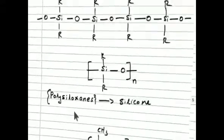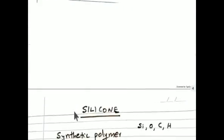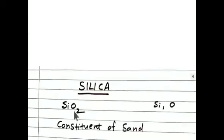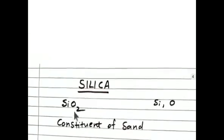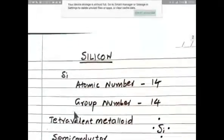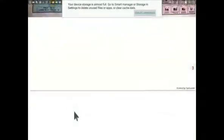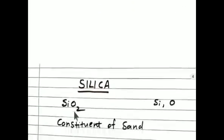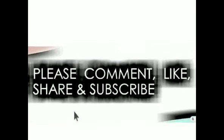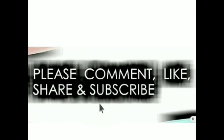Silicon is an element. Silica is a compound, SiO2. And silicone is a polymer. Thank you.